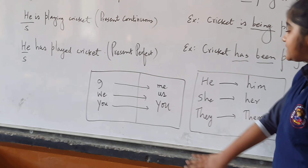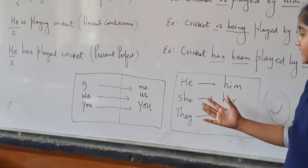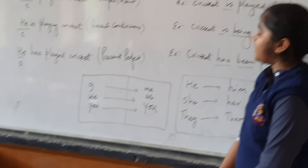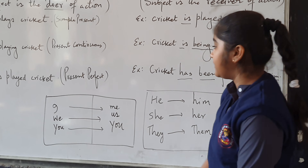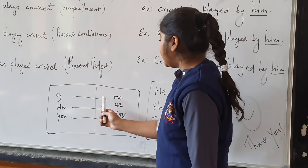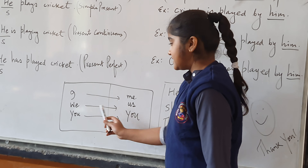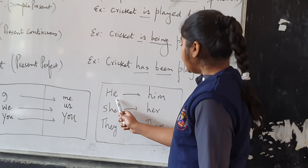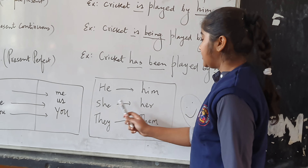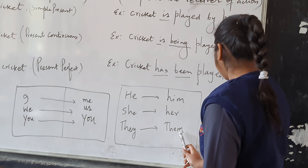These are the pronoun changes we use when converting to passive voice: I becomes me, we becomes us, you stays you, he becomes him, she becomes her, they becomes their.